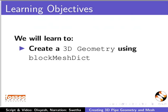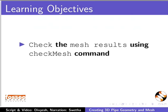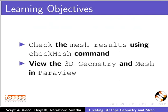Create a 3D geometry using blockMeshDict, mesh a 3D geometry, label the boundary patches, check the mesh results using checkMesh command, and view the 3D geometry and mesh in Paraview.